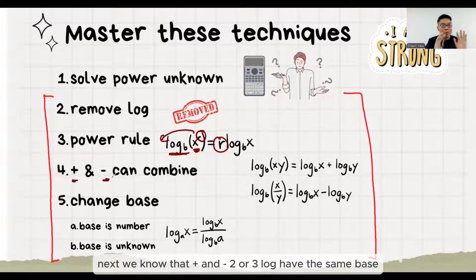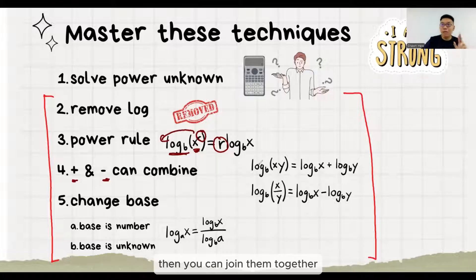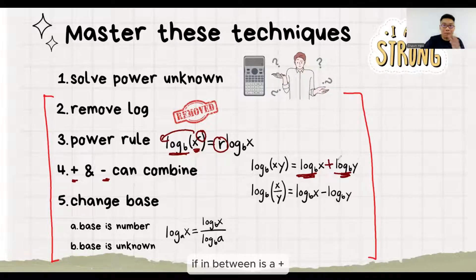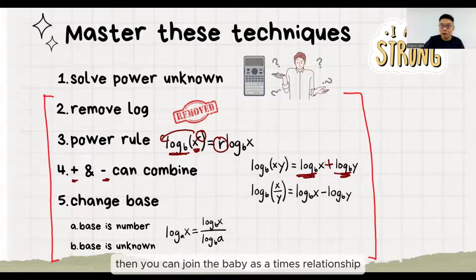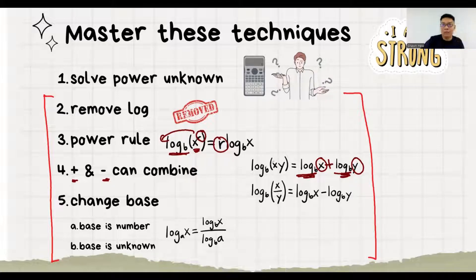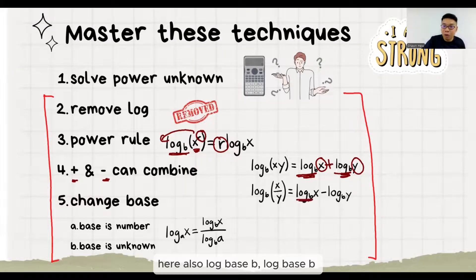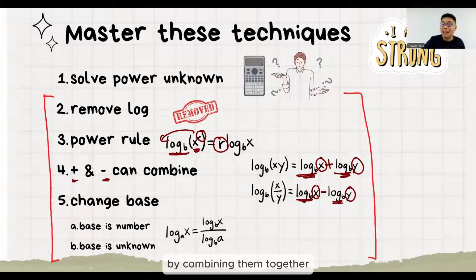Next, we know that if two or three logs have the same base in a plus or minus relationship, you can join them together. Log base B plus log base B — if in between is a plus, then you can join them into one log with a times relationship. Here also log base B and log base B, so you can join X and Y by combining them together.